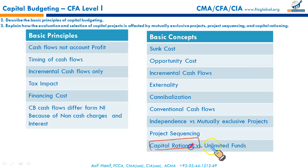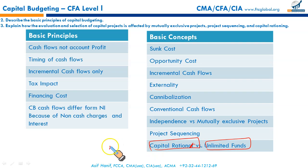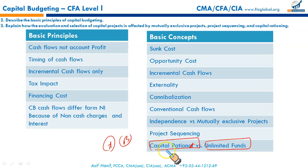Capital rationing means we have limited funds and cannot take on all projects. We can invest only in A or B, so we must make maximum use of available funds — maximizing NPV per dollar of investment. We use the profitability index to select among projects. When funds are unlimited, take on all projects that have a positive NPV.